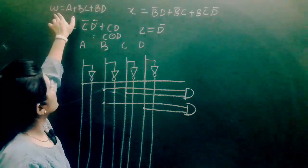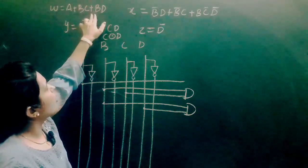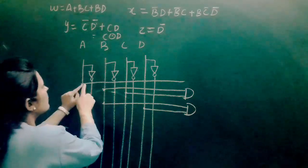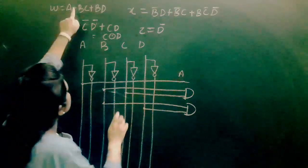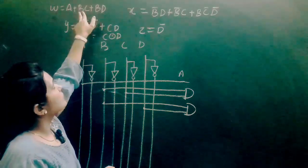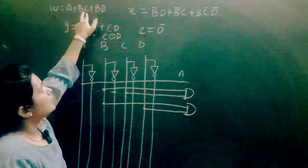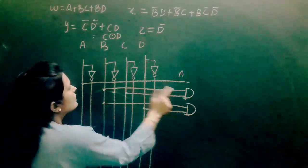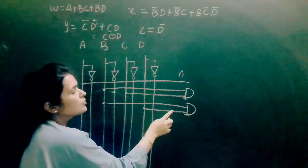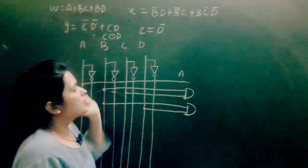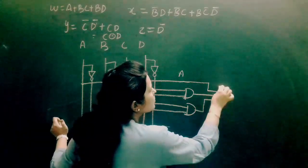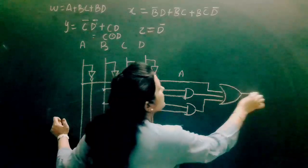Now let's draw the circuit for W. W equals A + BC + BD. So first we need A. Then B and C are combined by an AND gate to get BC. B and D are also combined by an AND gate to get BD. All of these terms — A, BC, and BD — are then combined using an OR gate. This is the circuit expression for W.